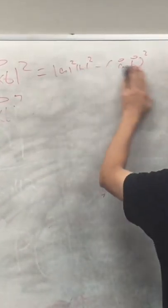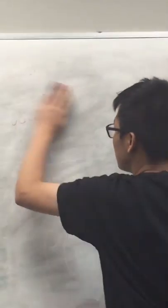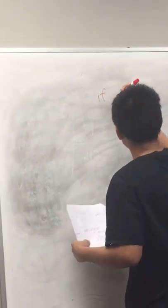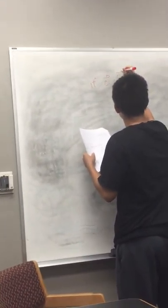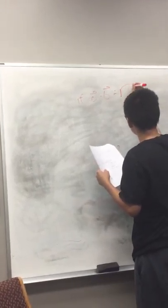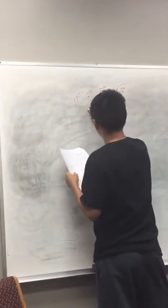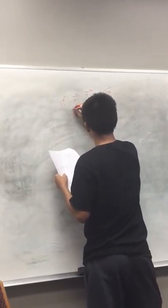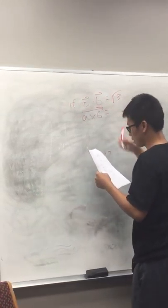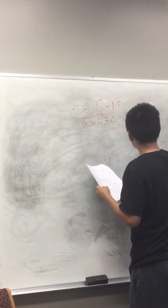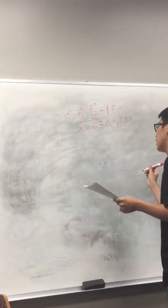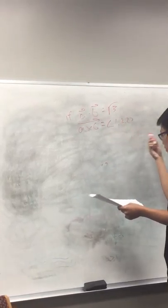if a dot b is equal to square root of 3, and a cross b is equal to 1i plus 2j plus 2k, then I have to find the angle between a and b.